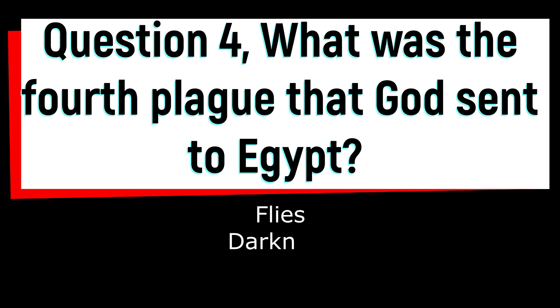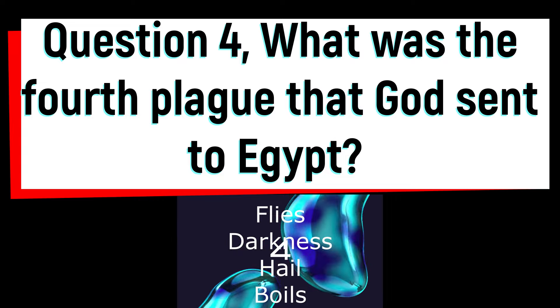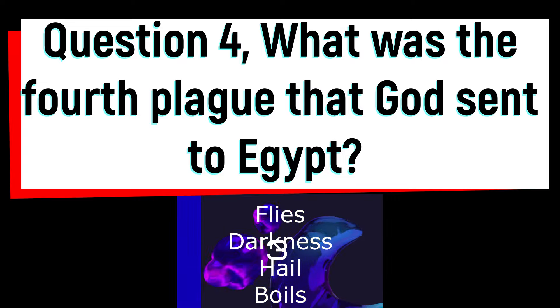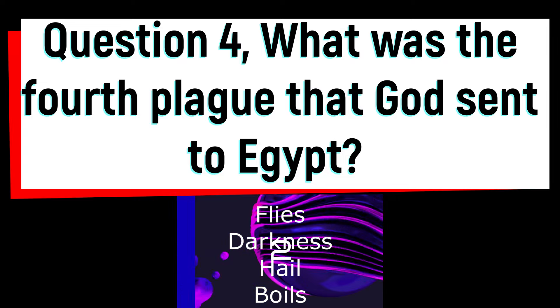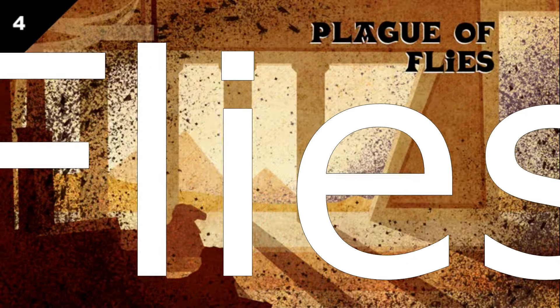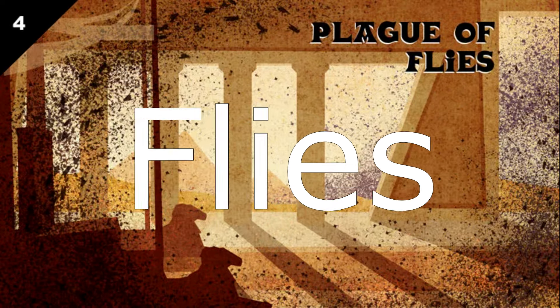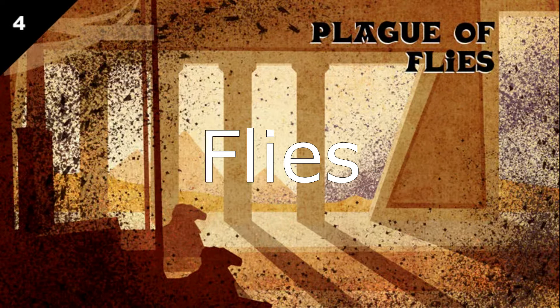Was it flies, darkness, hail, or boils? The answer is flies. God sent swarms of flies to bother the Egyptians. The flies were very annoying and dirty. They also carried diseases.